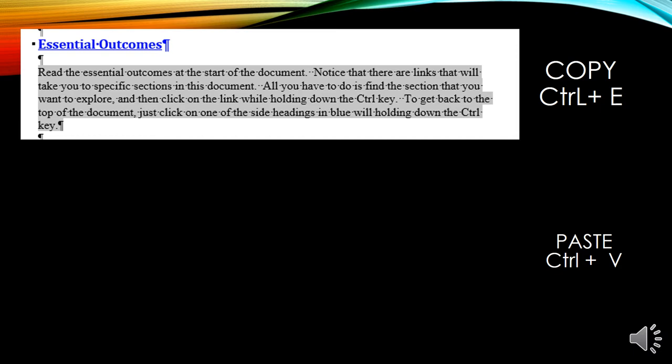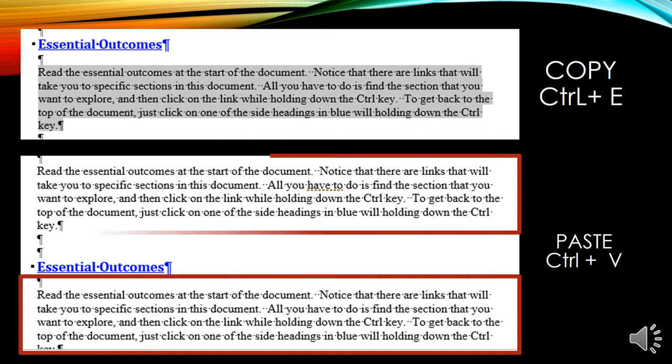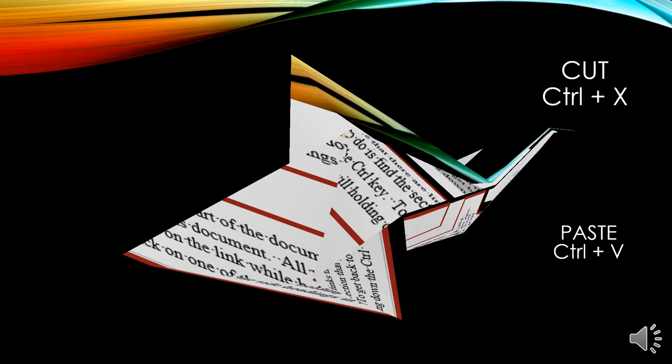Copying and pasting. To copy, use Ctrl plus C. In this situation, I want to copy an entire paragraph and place it in another section. So I'm going to triple click on the paragraph, hit Ctrl C, go where I want to duplicate the text, and then do Ctrl V to paste it in. As you can see in the example, the text is now duplicated and located in two places.